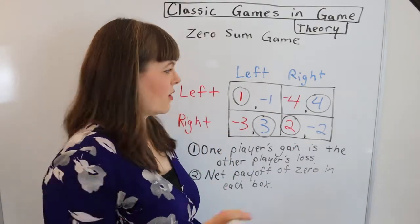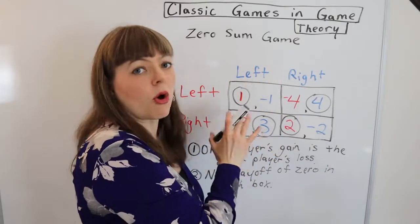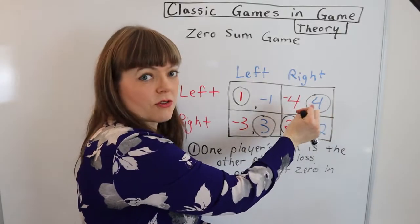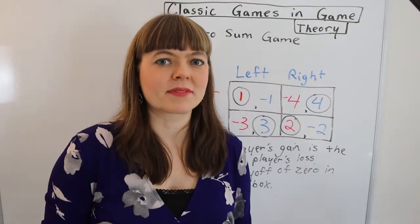I just want to point out that the payoffs in any one given box do not have to be the same across all boxes in the table. You can have different payoffs as long as they kind of counterbalance each other. And that's the basic structure of a zero sum game.